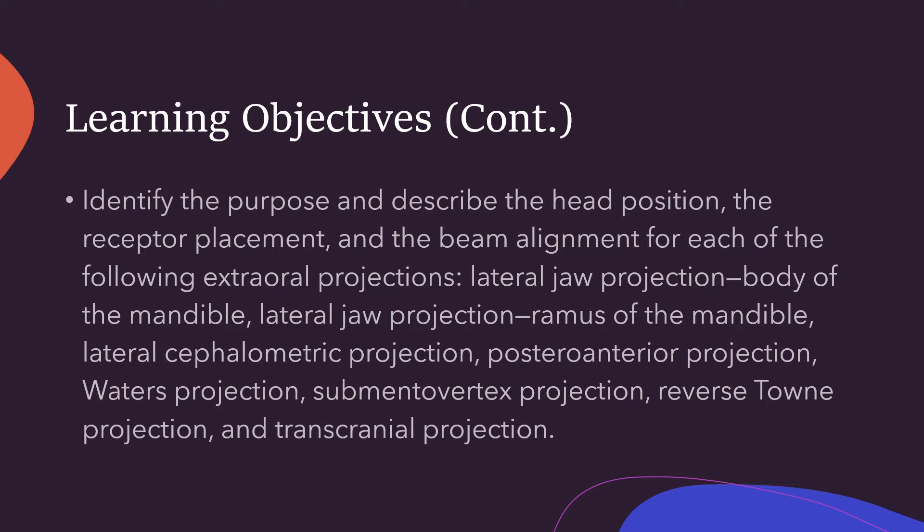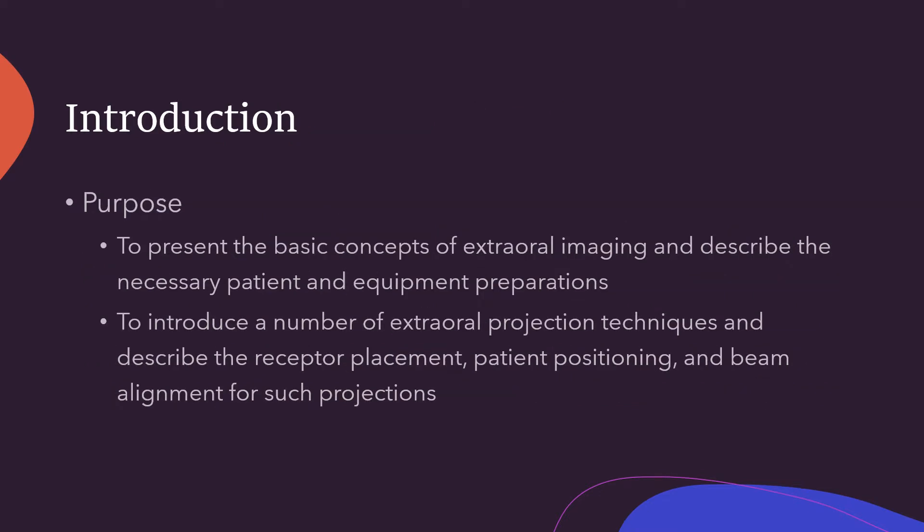I do expect you to at least kind of understand which is which. There's a lateral jaw projection which includes the body of the mandible, and a lateral jaw projection ramus of the mandible. There is a lateral cephalometric projection, a posterior anterior projection, the Waters projection, submental vertex projection, the reverse Towne projection, and transcranial projection.